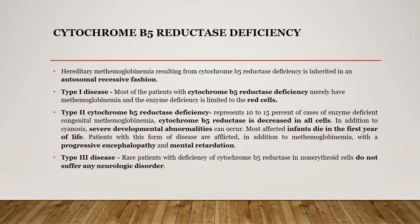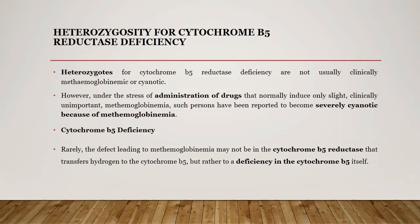In Type 2 cytochrome b5 reductase deficiency, which accounts for 10 to 15 percent of the disease, the enzyme deficiency is distributed to all cells of the body. In addition to methemoglobinemia, we have severe developmental abnormalities — infants generally present with progressive encephalopathy and mental retardation, and they die within one year of life. The third entity, comparatively rare, is Type 3, where cytochrome b5 reductase is restricted to non-erythroid cells, but surprisingly patients do not suffer any neurological complications. We also get some heterozygotes of cytochrome b5 reductase deficiency.